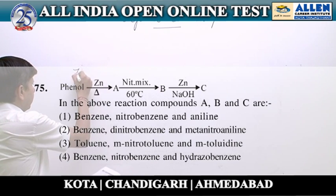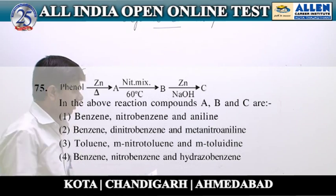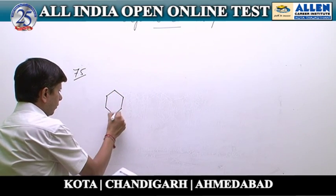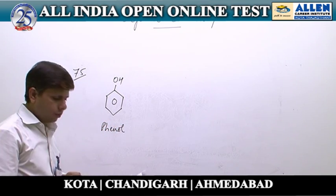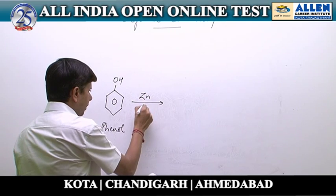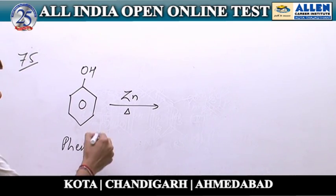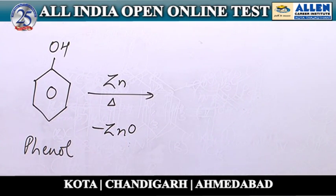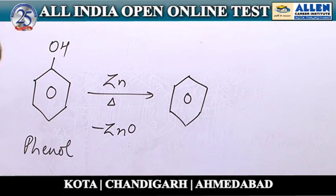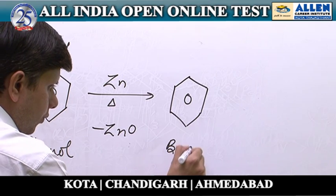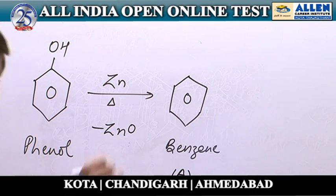Question number 75. In this question, a sequence of reactions is given in which phenol is to be reacted with zinc under temperature conditions. Reaction of phenol with zinc in temperature condition involves deoxygenation, in which removal of oxygen from phenol gives benzene. So the reaction product will be benzene, that is compound A in the sequence of reactions.